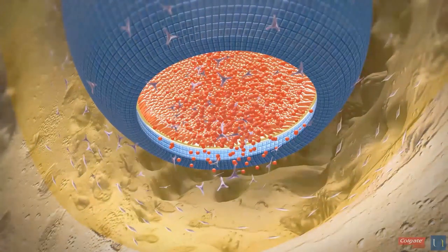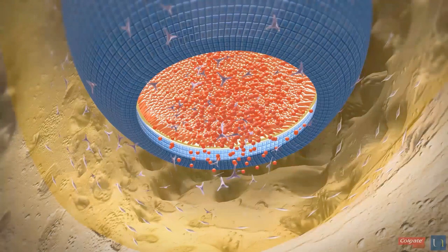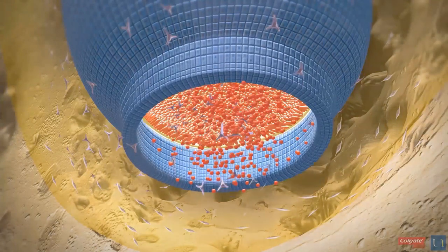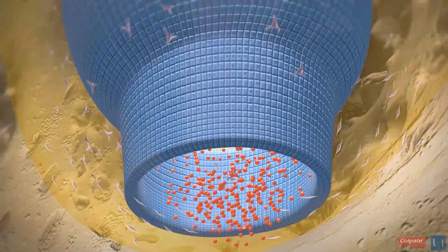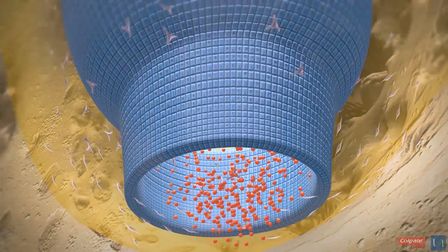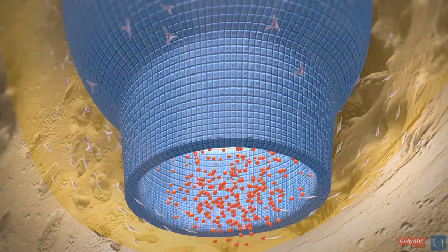The root's formation starts with the proliferation of the epithelial cells of the cervical loop, located in the region of the cervical margin of the crown. This creates an epithelial sheath, which bends inwards to form Hertwig's epithelial root sheath.